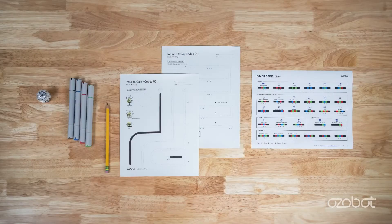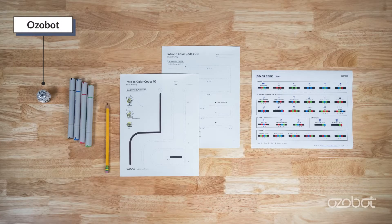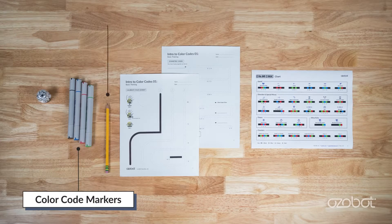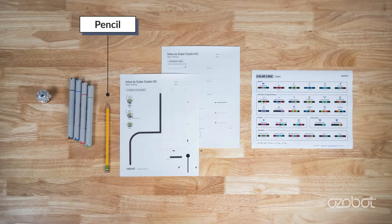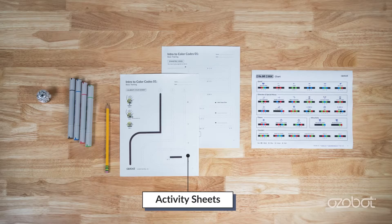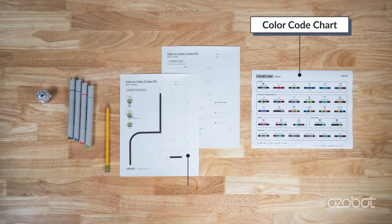Today you'll be having some fun as you learn Ozobot basic. You will need an Ozobot fully charged and calibrated, color code markers, a pencil, both pages of the intro to color codes basic training activity sheets, and a color code chart.